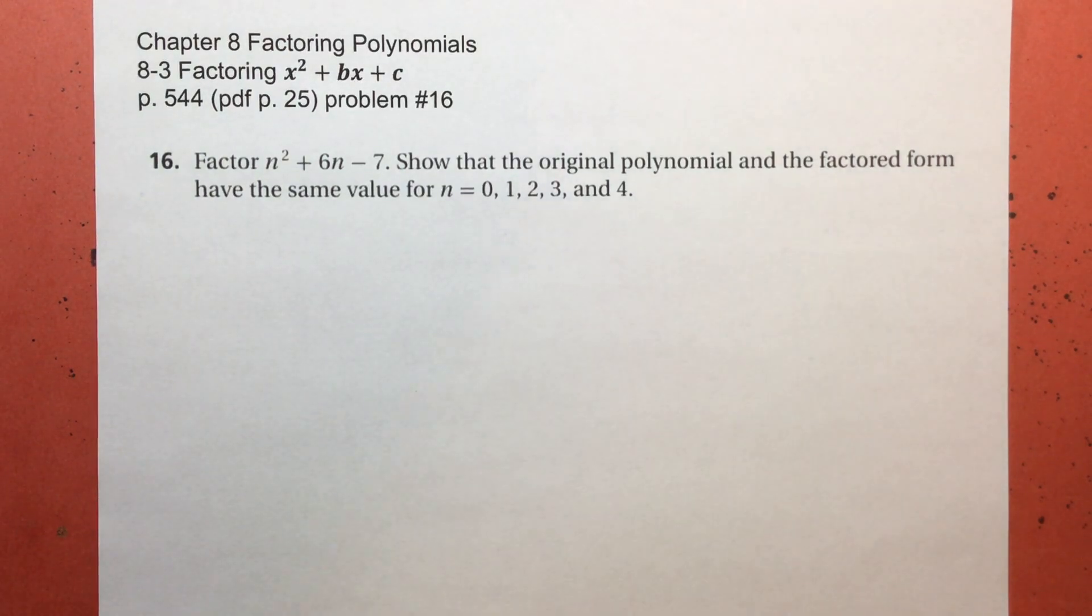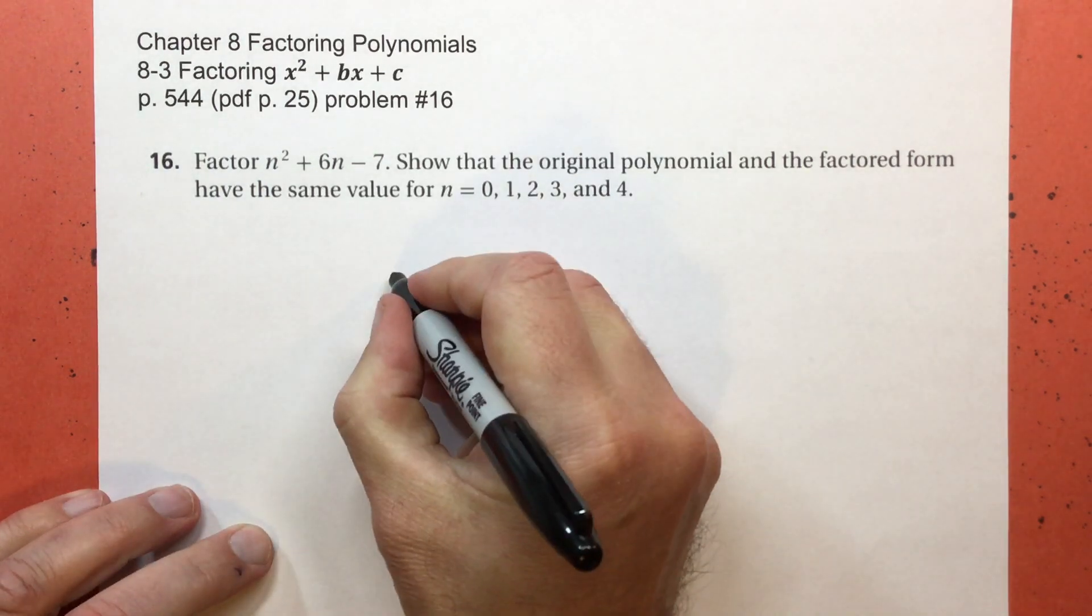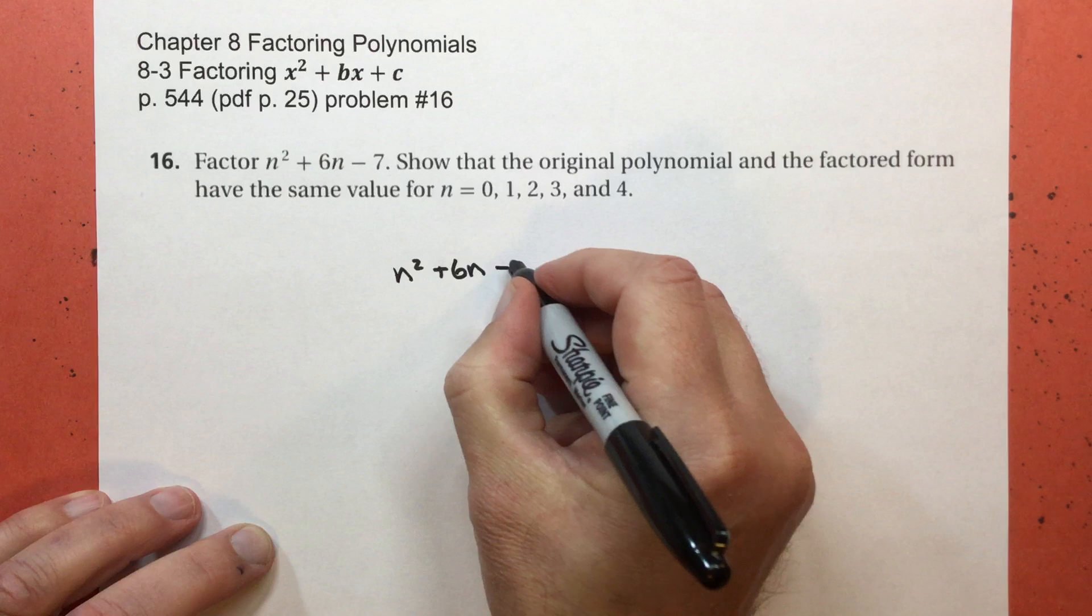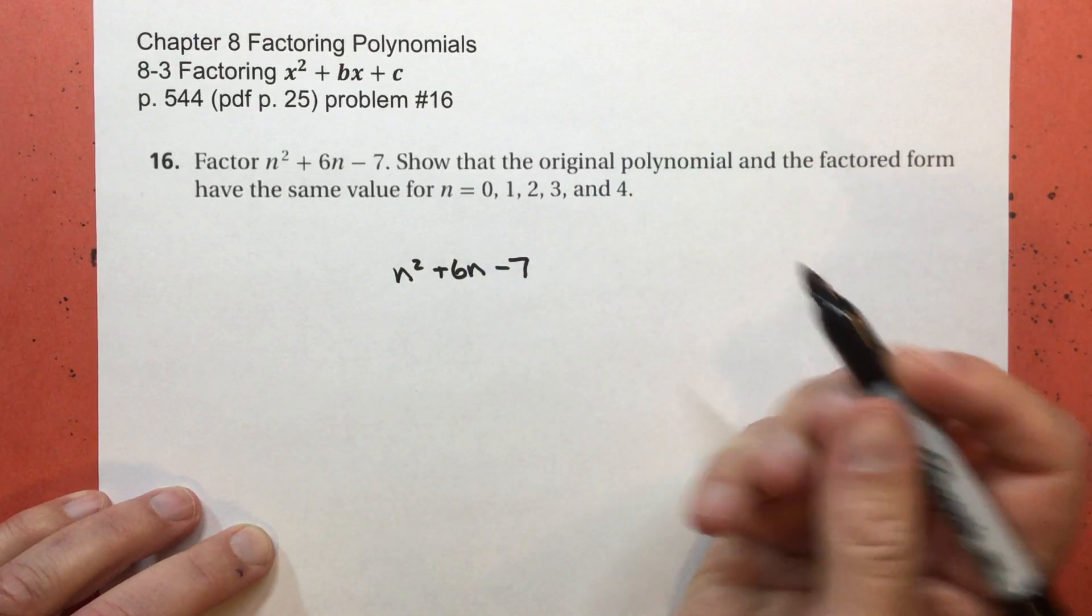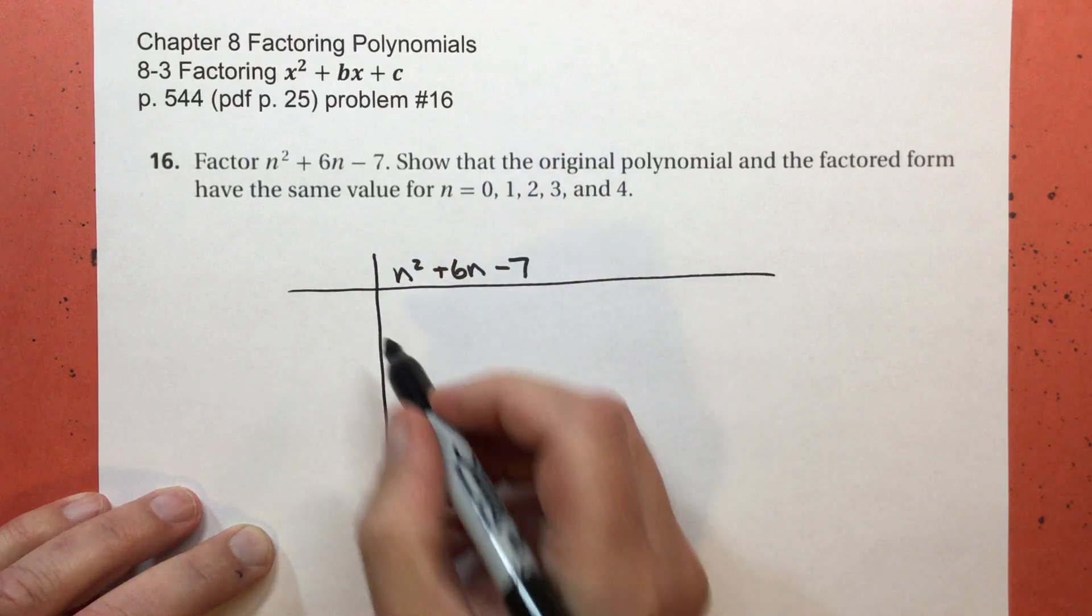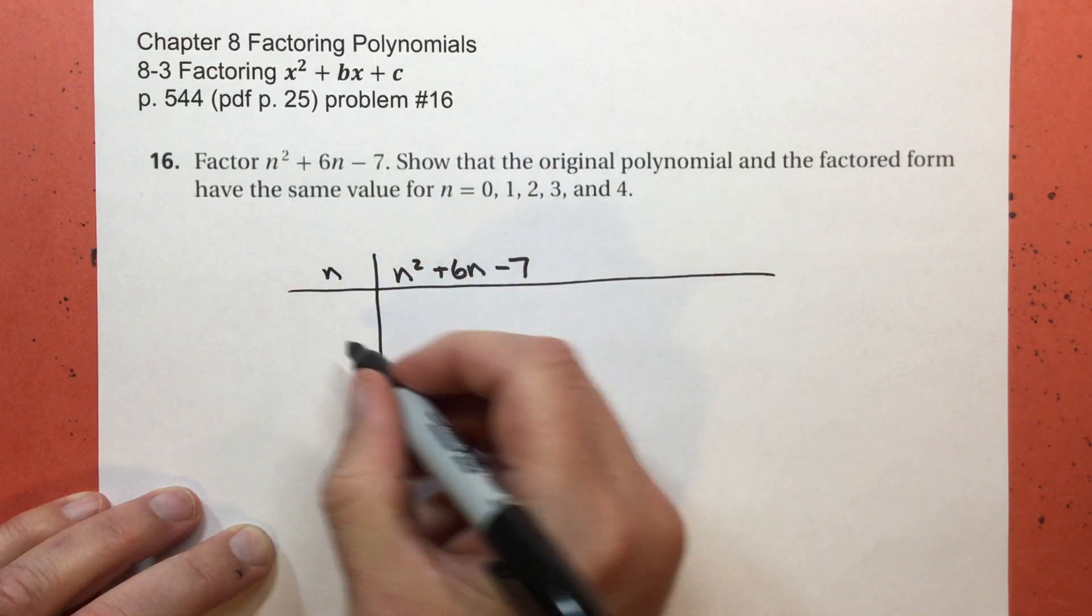All right, we are working on page 544 in section 8-3 and we're going to do this last problem number 16 where we're going to take this polynomial, which is n to the second power plus 6 times n subtract 7, and we're going to factor it. And when we factor it, we're going to test it for these values of n.